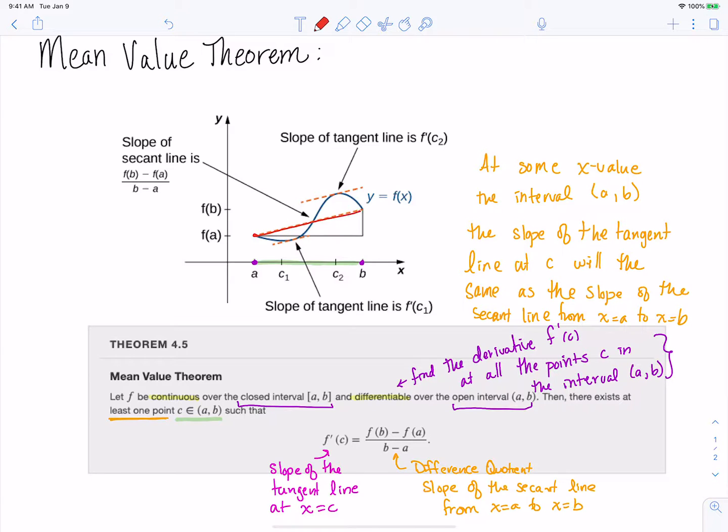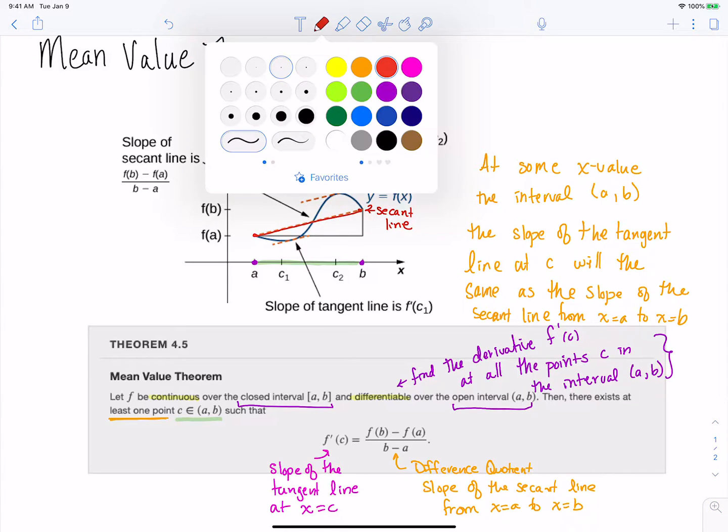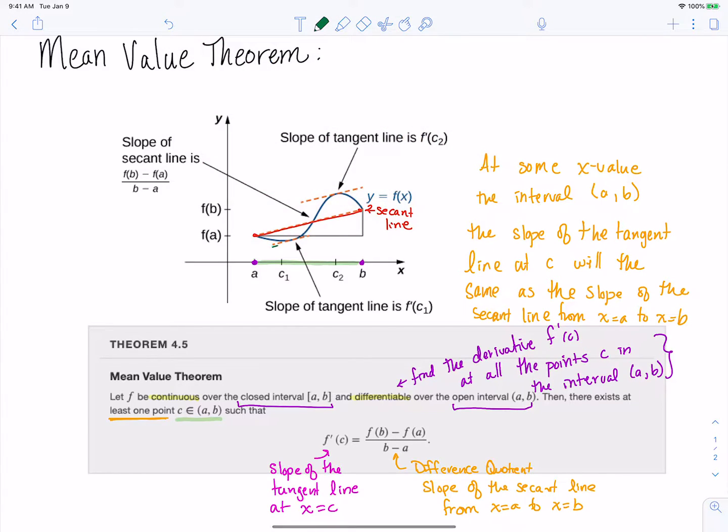So this first line right here, that's our secant line. And then in this picture we have two tangent lines, this guy right here and this guy right here, that have the same slope as our secant line. Notice we've got three parallel lines sitting there. So we're saying that we can do this for any of these functions that are continuous and differentiable.